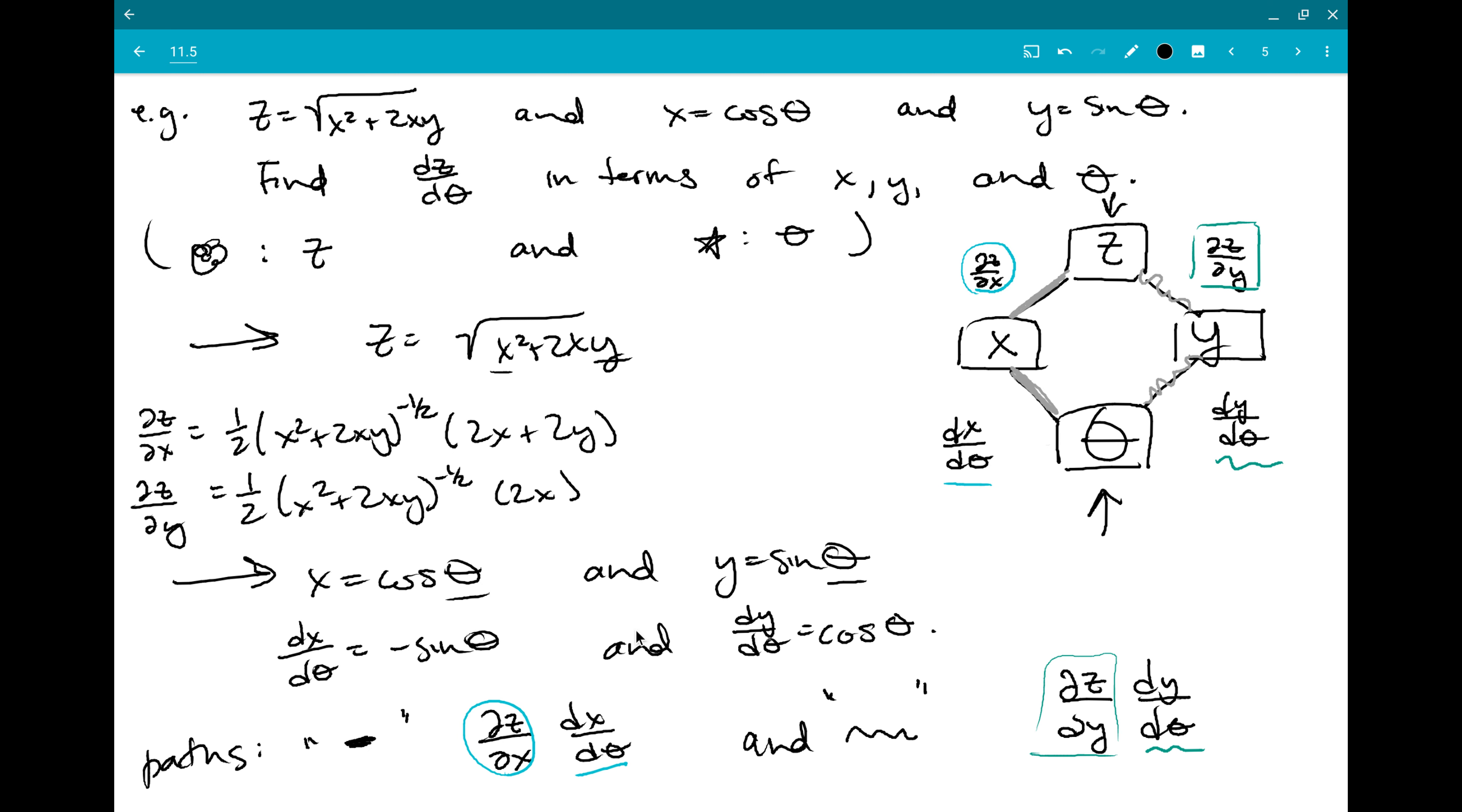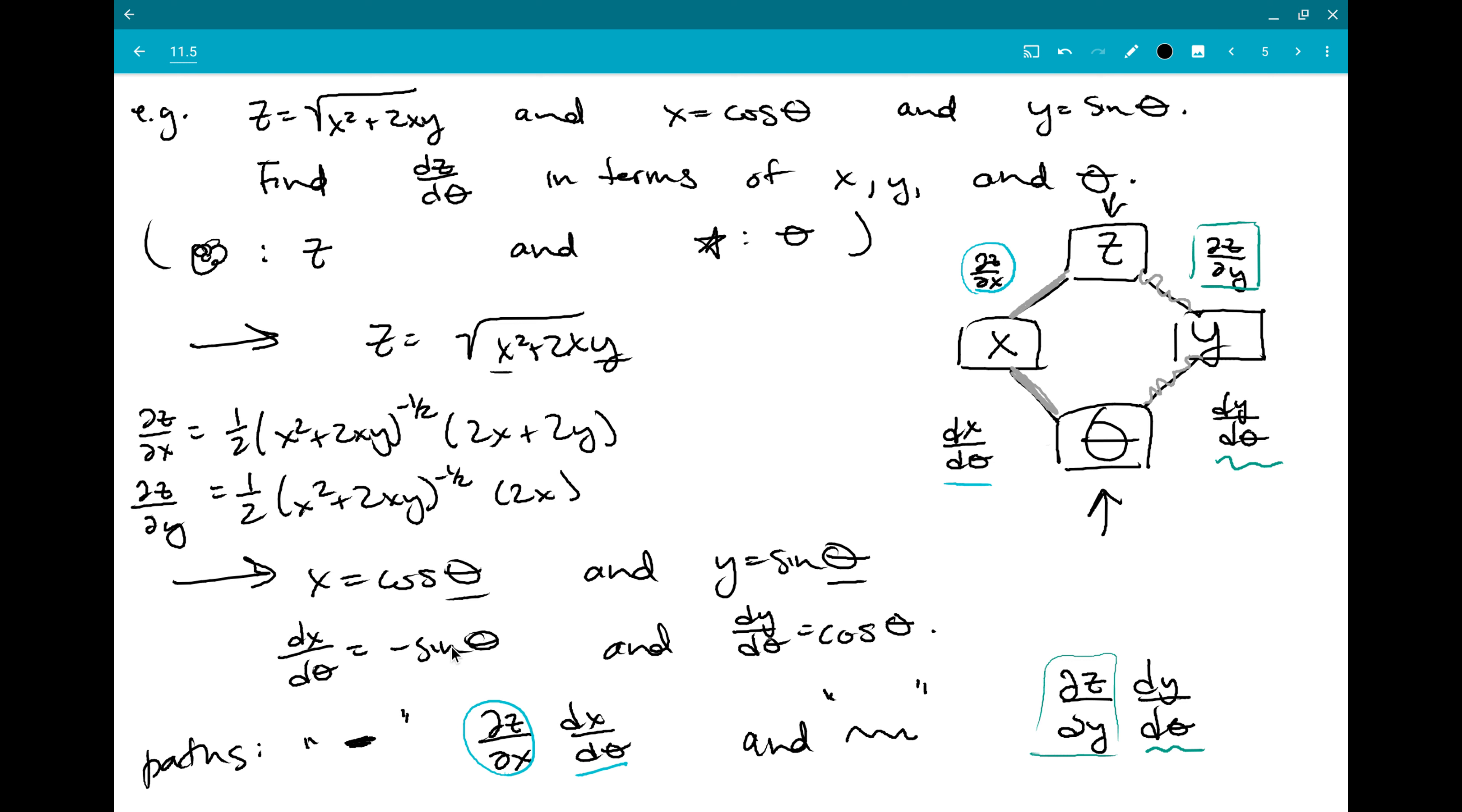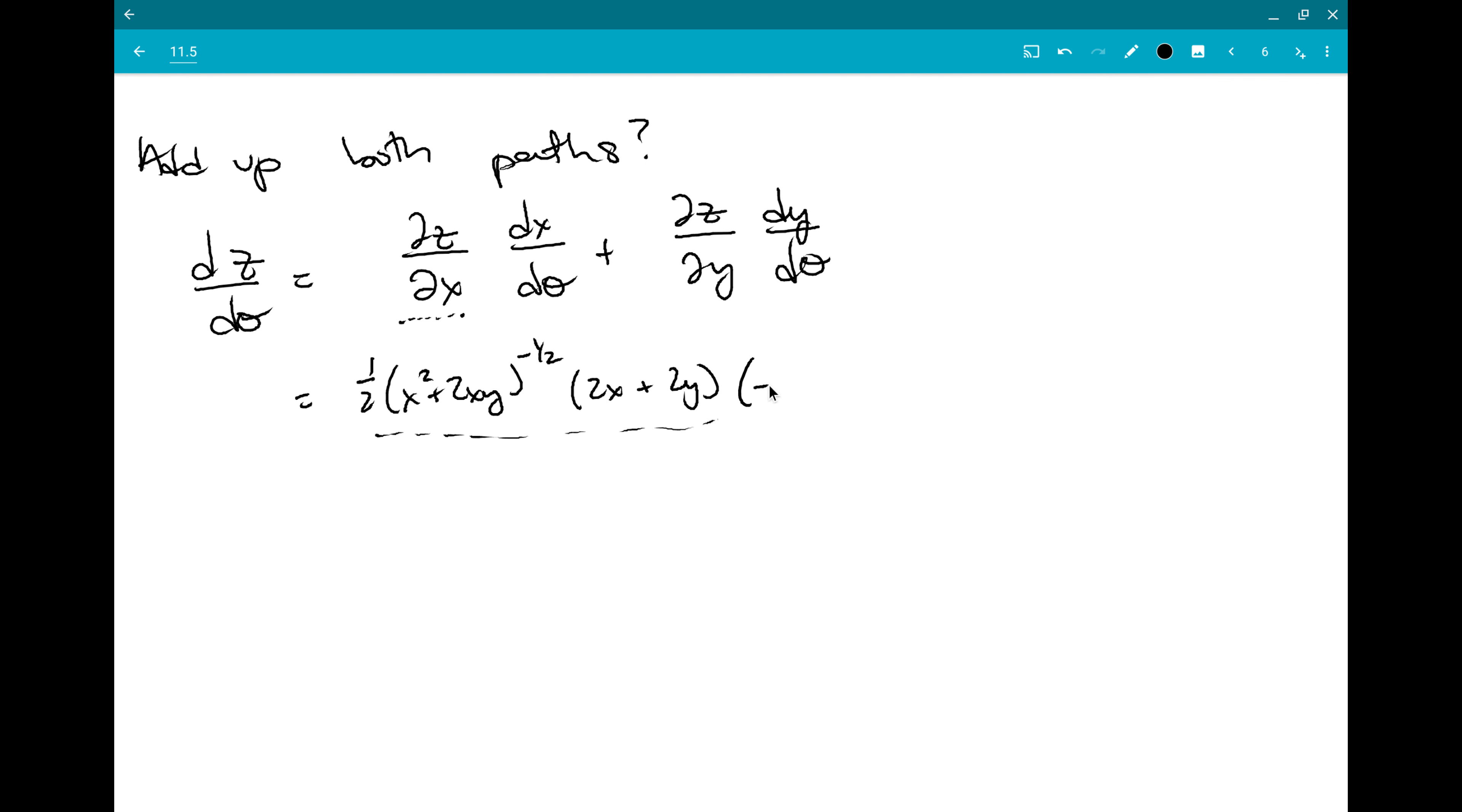And then I already calculated all those amounts, so I can just go ahead and put them in my equation. It will get to be quite long. And I've got that one half, is it x squared plus 2xy? To the minus a half times that 2x plus 2y for my dz dx. And then my dx d theta was minus sine theta.